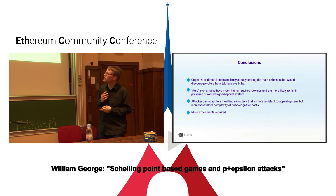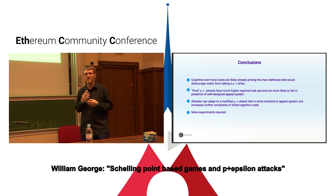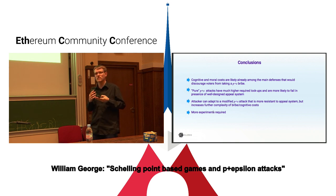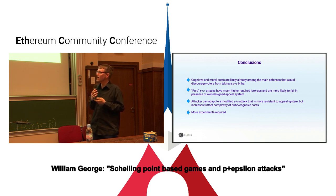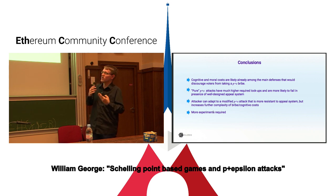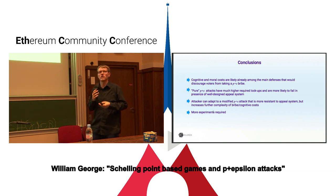To conclude: we already thought cognitive costs were an obstacle to P-plus-Epsilon attacks — probably the strongest defense. Because pure P-plus-Epsilon attacks are less effective against well-designed appeal systems, an attacker can adapt to versions that preserve the spirit of the attack but are even more complicated — so cognitive costs are even higher. Since cognitive costs were already a good defense, they should be an even better defense with an appeal system. And of course, we're going to do more experiments.